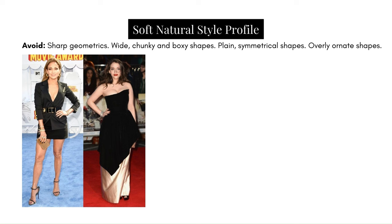Avoid sharp geometrics. In Jennifer Lopez's case, that sharpness and angularity really doesn't sit well with the overall soft quality of her body type — everything feels too stiff and stark against her. In Kat Dennings's case, the top part of the dress has a velvety quality that drapes beautifully, but the white undergarment is very sharp, straight, and stark. The black dress creates a very sharp geometric cut — those stark lines take away from what would otherwise have worked.